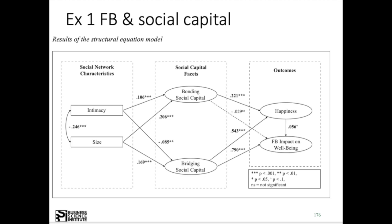We accept hypothesis 6: bridging social capital has a highly significant impact at the 0.001 level on Facebook impact on well-being. And lastly, at the 0.05 level, hypothesis 7 — happiness has a positive impact on Facebook impact on well-being. This is a graphical representation of our results, and you see chronologically we deal with different hypotheses and accept or reject them according to significance levels.